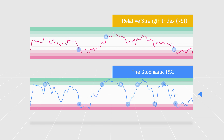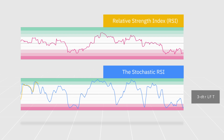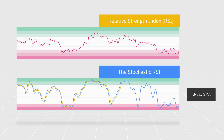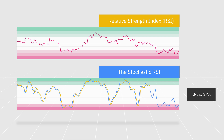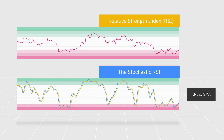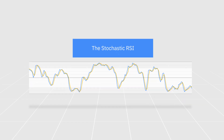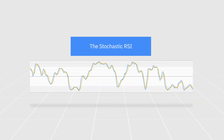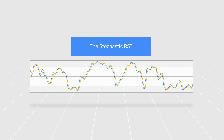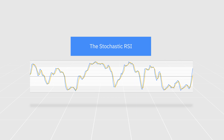Due to its increased speed and sensitivity, some charts include a 3-day simple moving average along with the Stochastic RSI line. The SMA acts as a signal line and is meant to reduce the risks of trading on false signals. As such, the Stochastic RSI should be used along with other tools to help confirm the signals it creates, especially in volatile markets.